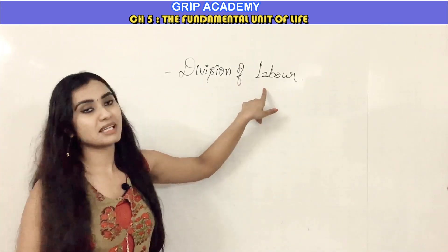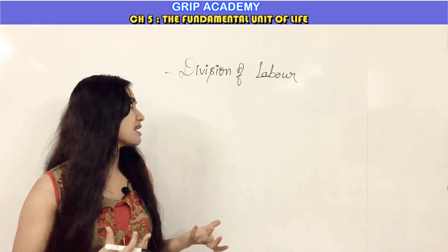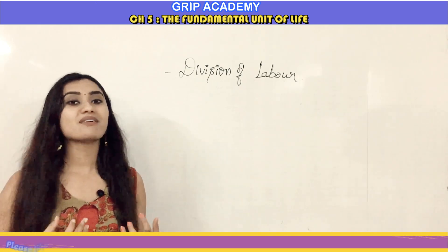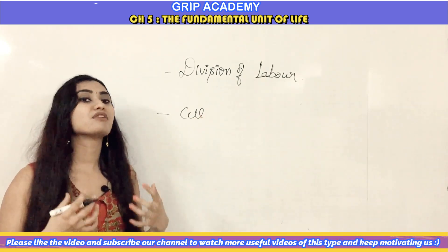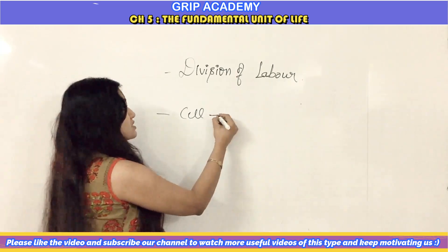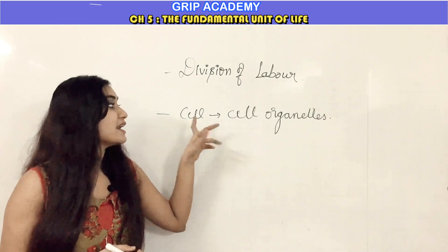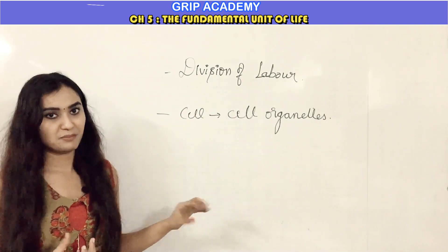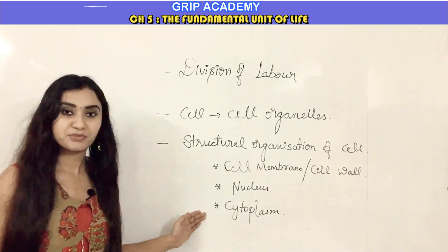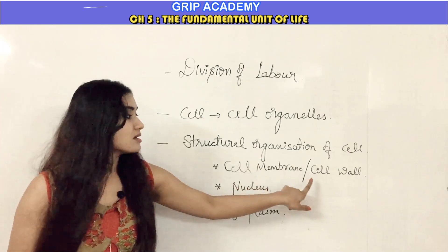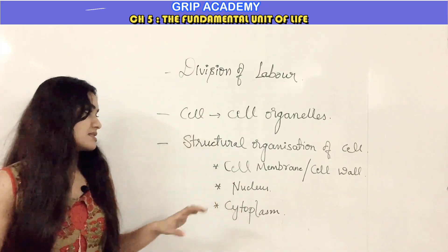The next topic is division of labor in multicellular organisms. In an organ system, specific organs carry out specific functions — for example, the stomach digests food and the heart pumps blood. Similarly, within the cell, specific components carry out particular functions. These components are called cell organelles. Every cell is basically made up of three components: cell membrane or cell wall, nucleus, and cytoplasm.